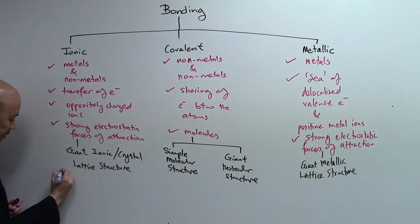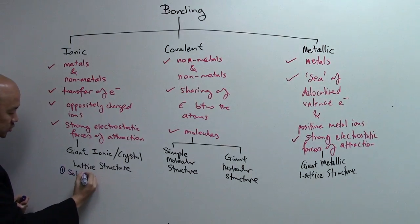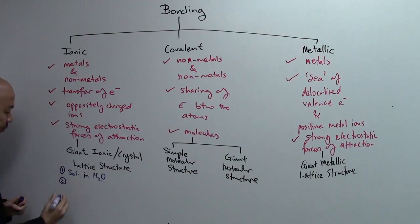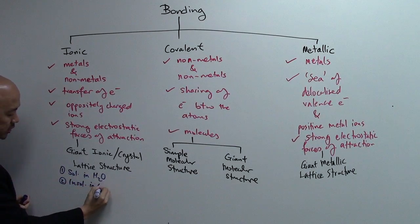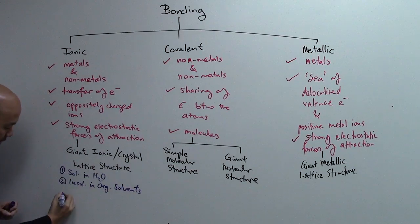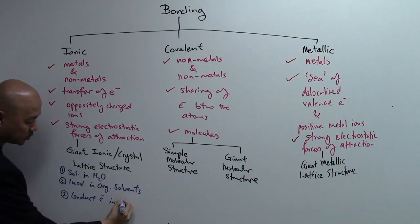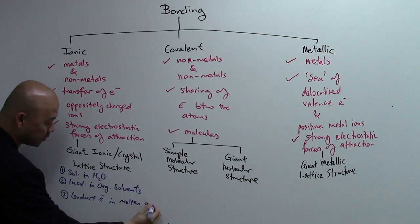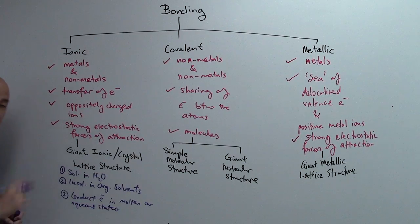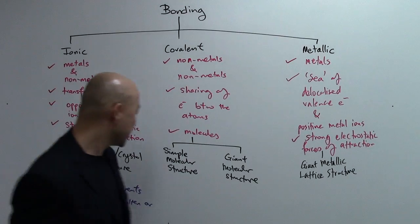Ionic compound, the first physical property is that it tends to be soluble in water. Most of them are soluble in water, usually. And the second one, they are insoluble in organic solvents such as your oil. Third, they conduct electricity in molten or aqueous state. These are the three physical properties of ionic compound or giant ionic crystal lattice structure.